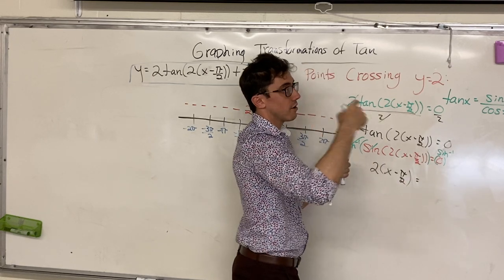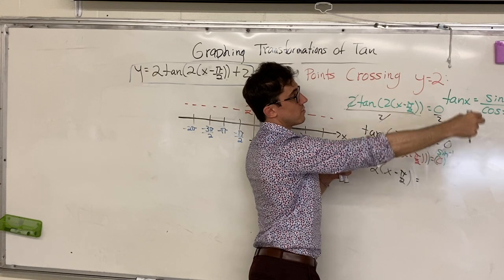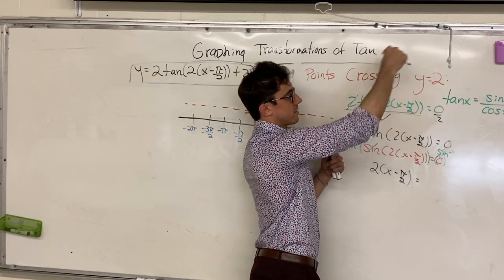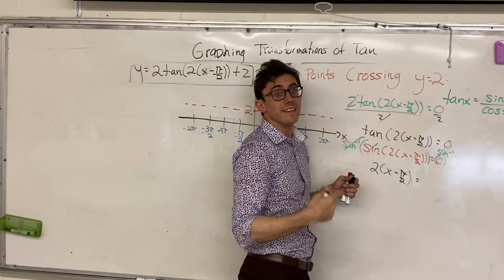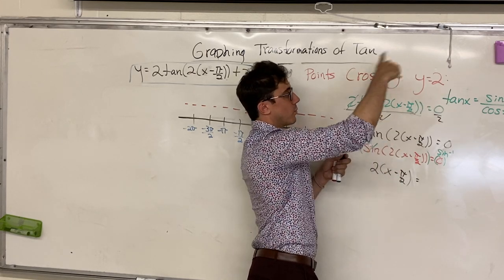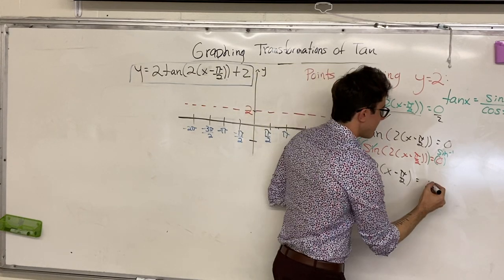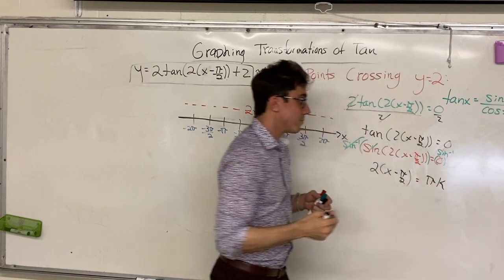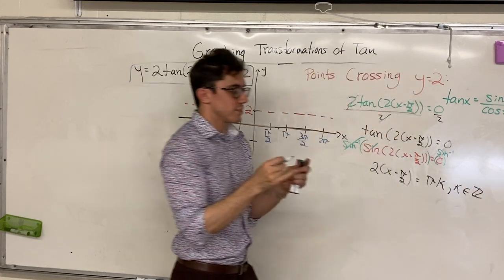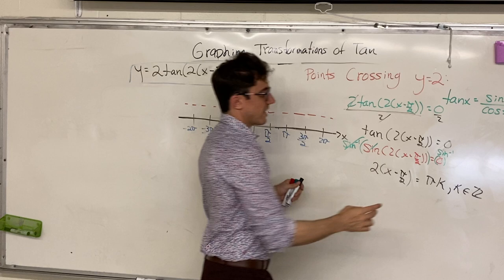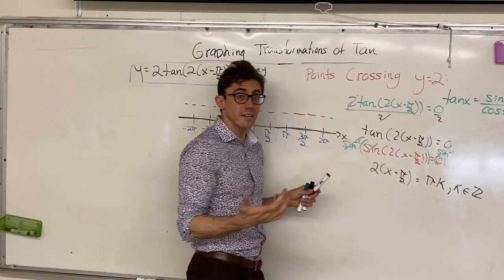Let's go ahead and solve this equation. We'll take the inverse sine of both sides to get rid of the sine, and we find ourselves with 2 bracket x minus π over 2 is equal to the inverse sine of 0. On the unit circle, the sine of theta is the y-coordinate. So we get it at 0, at π, at 2π, at 3π, at 4π — every integer multiple of π. That is to say π times k, where k is any element of the set of integers.